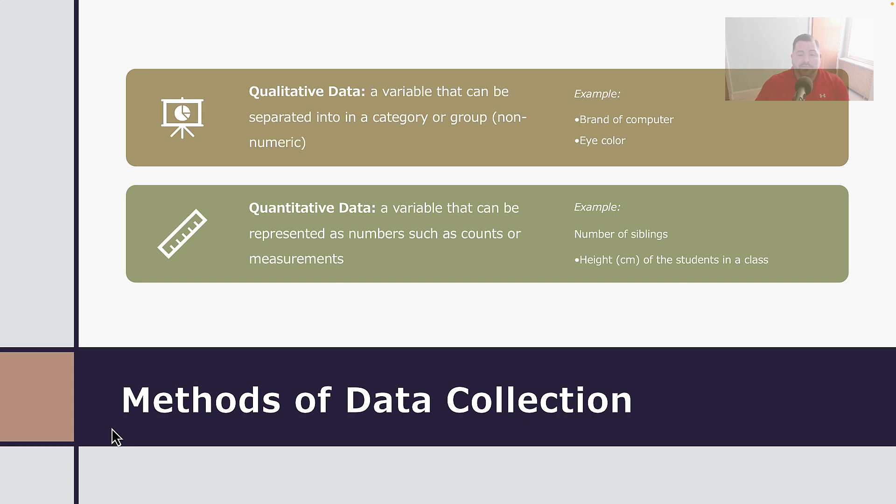Some examples of quantitative data that's collected would be the number of siblings that a person has, or a person's height that may be measured with an anthropometer in a laboratory setting.